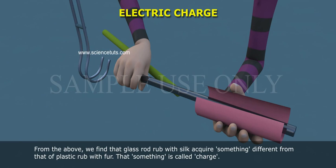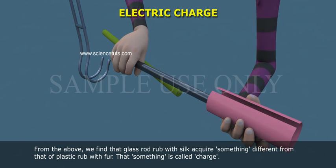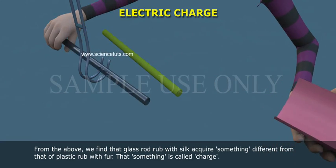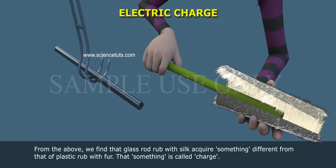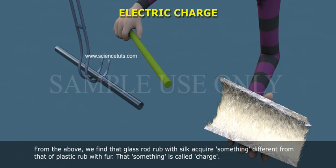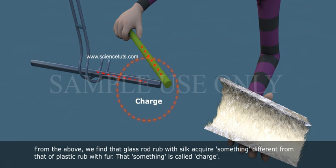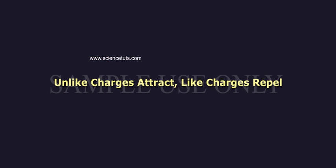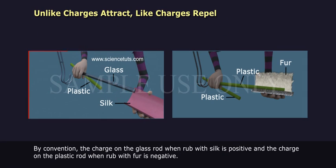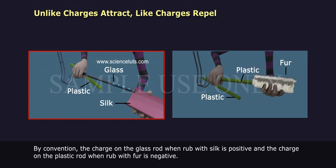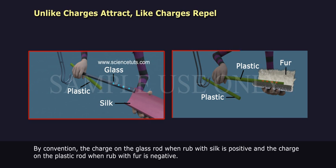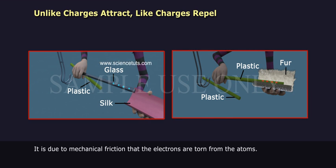From the above, we find that a glass rod rubbed with silk acquires something different from that of a plastic rod rubbed with fur. That something is called charge. Unlike charges attract; like charges repel. By convention, the charge on the glass rod when rubbed with silk is positive, and the charge on the plastic rod when rubbed with fur is negative. It is due to mechanical friction that the electrons are torn from the atoms.